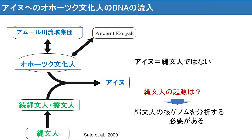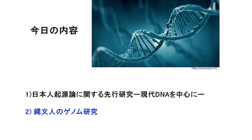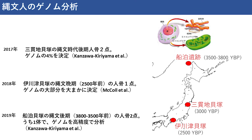つまり現代のアイヌは、縄文人、オホーツク文化人、それから本土日本人との混血によって成立しているということがわかってきました。つまりアイヌイコール縄文人ではないということになります。そうしますと縄文人が現代の我々にどの程度遺伝的に寄与しているのかは、縄文人のDNAを直接分析して比較することによって明らかにする必要があります。